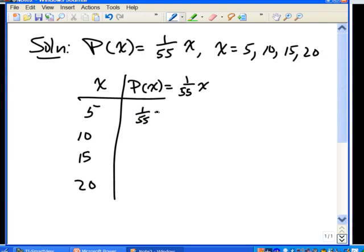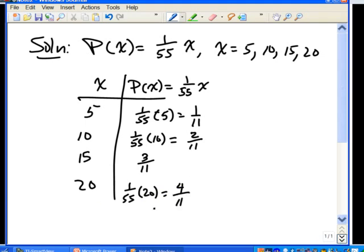So if we put in 5, we get 1/55 times 5. Well, that's 1/11 when you reduce that. And we can do 1/55 times 10. We can reduce that by a 5, and we get 2/11 for that. If you put in 15, we end up getting 3/11. And finally, if you put in 20, we can reduce this by a 5 and get 4/11. So here's our probability distribution for this probability mass function that we have.